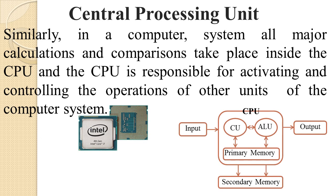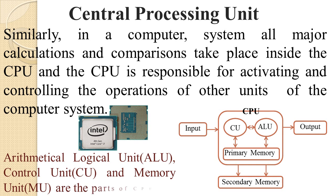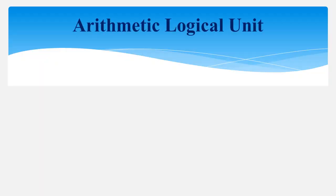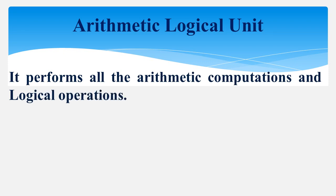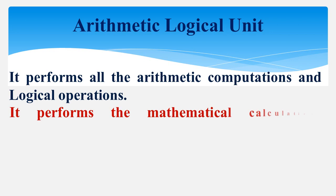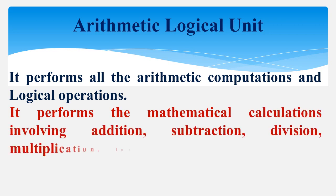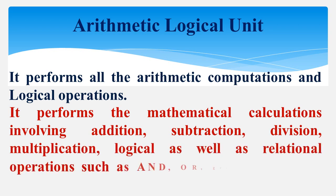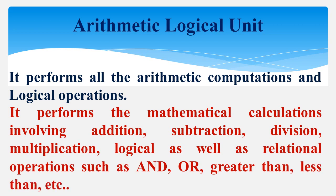The CPU contains three parts: CU (Control Unit), ALU (Arithmetic Logic Unit), and the primary memory unit. The ALU performs all arithmetic computations and logical operations. It performs mathematical calculations involving addition, subtraction, multiplication, and division, as well as logical and relational operations such as AND, OR, NOT, greater than, less than, etc.